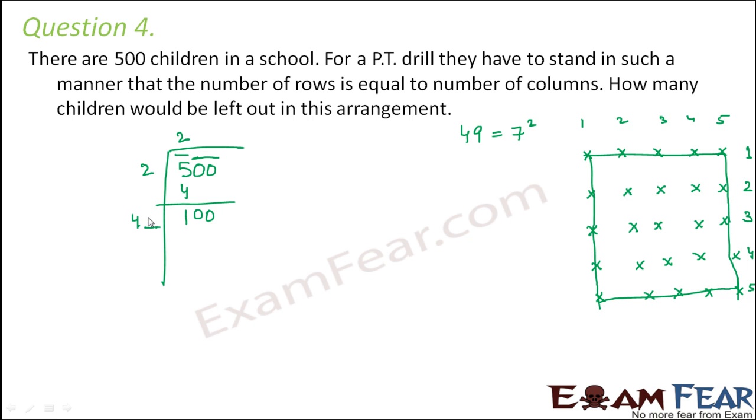So what would be that blank? So we see that the blank could be 2. So 42 into 2 is 84. And we see that the final remainder is 16. So the final remainder is not 0. That means 500 is not a perfect square. That means if we want to make this arrangement with 500 students, we can make this arrangement, but some 16 students will be left out.